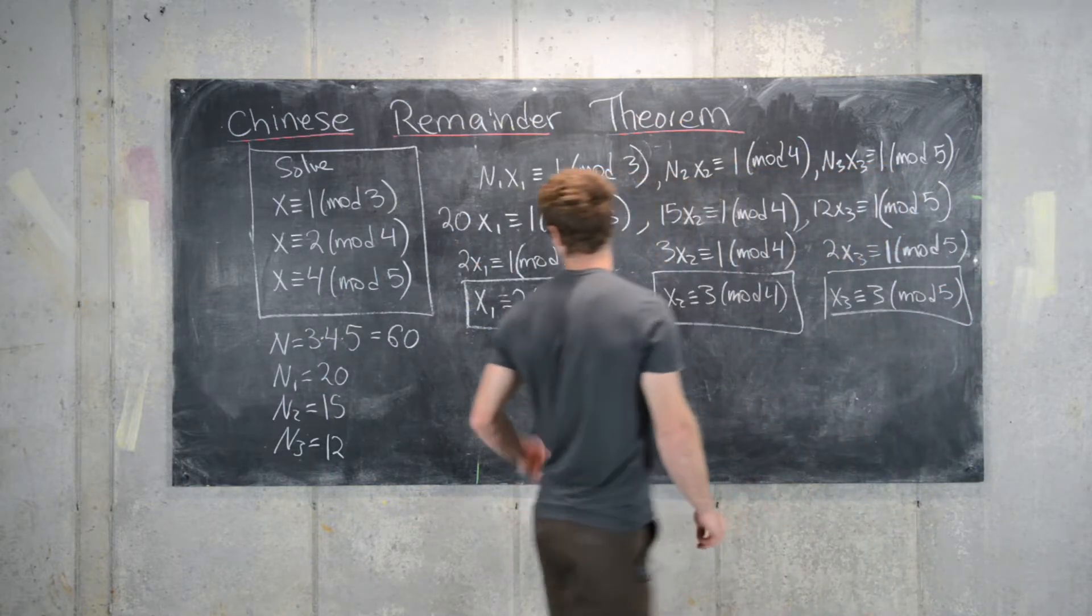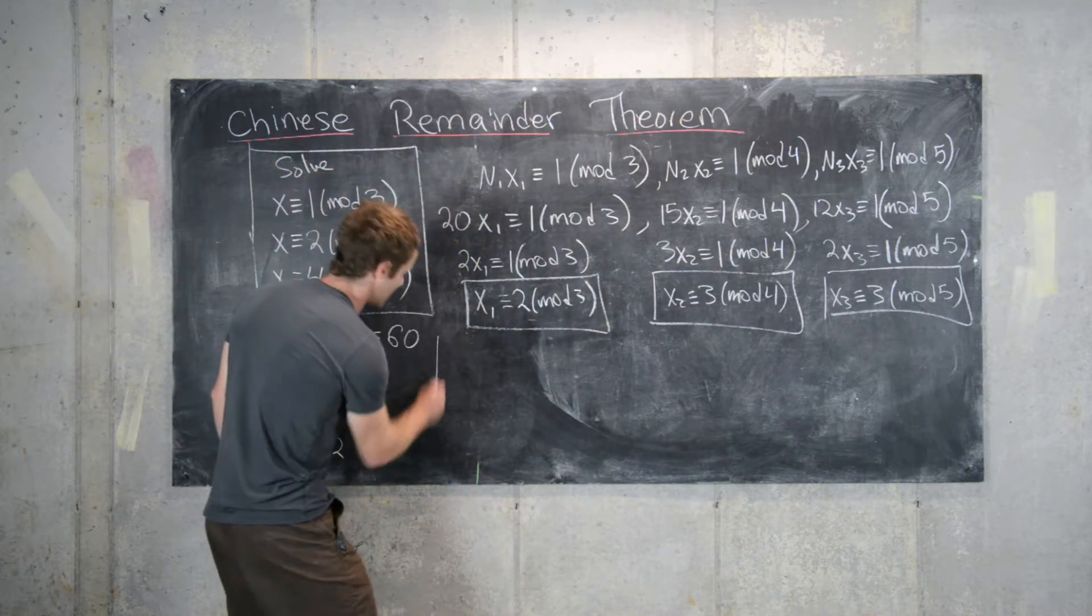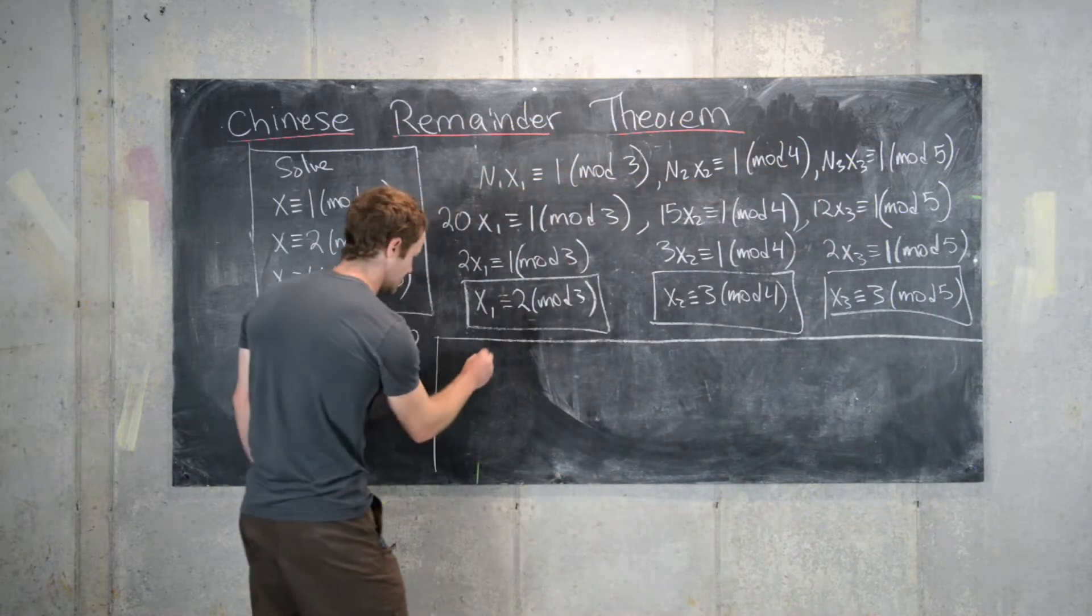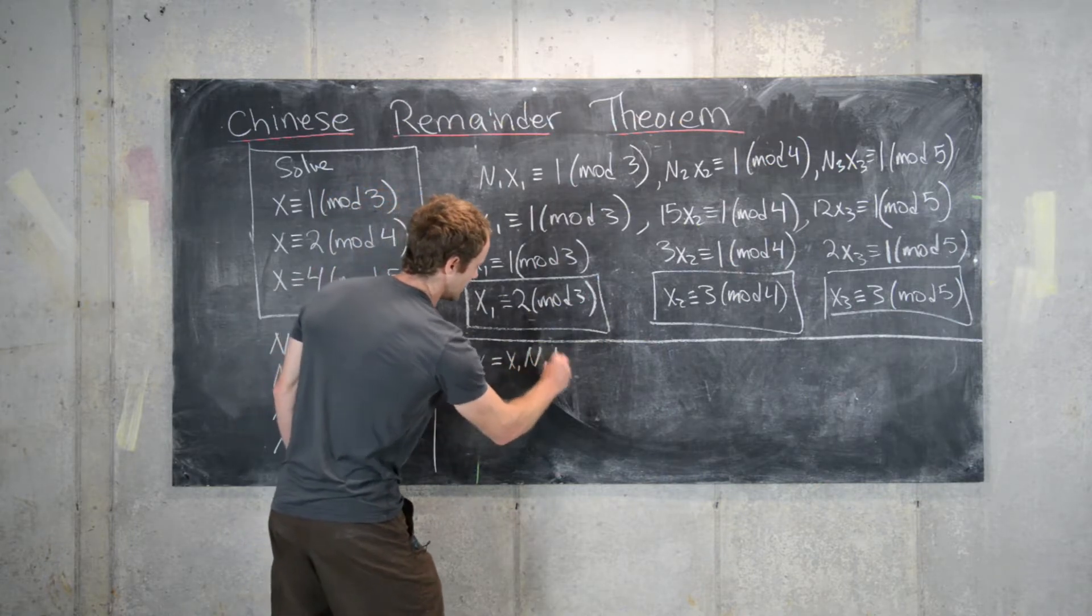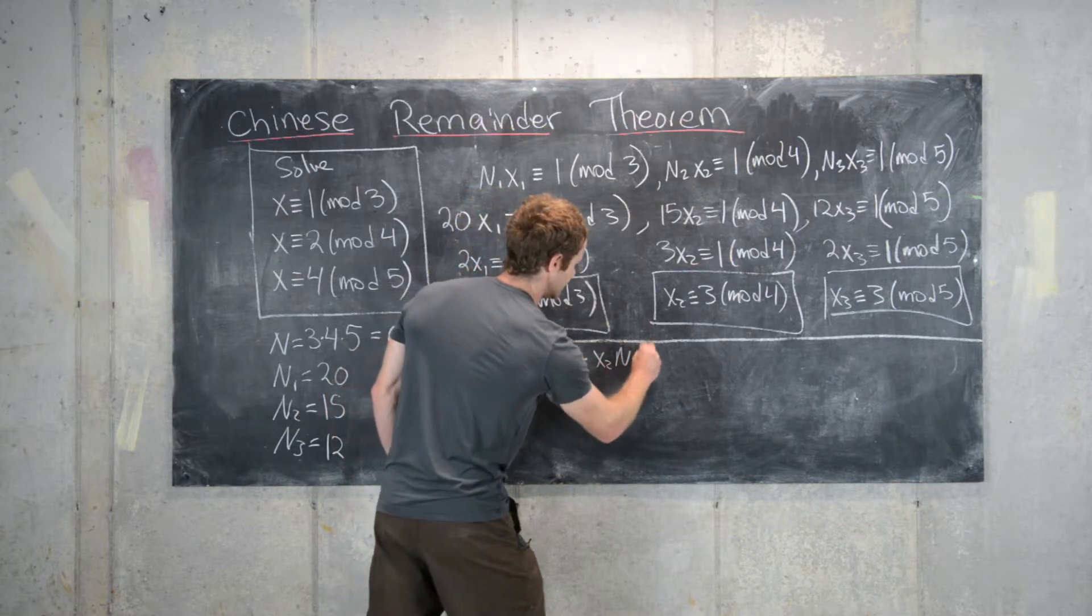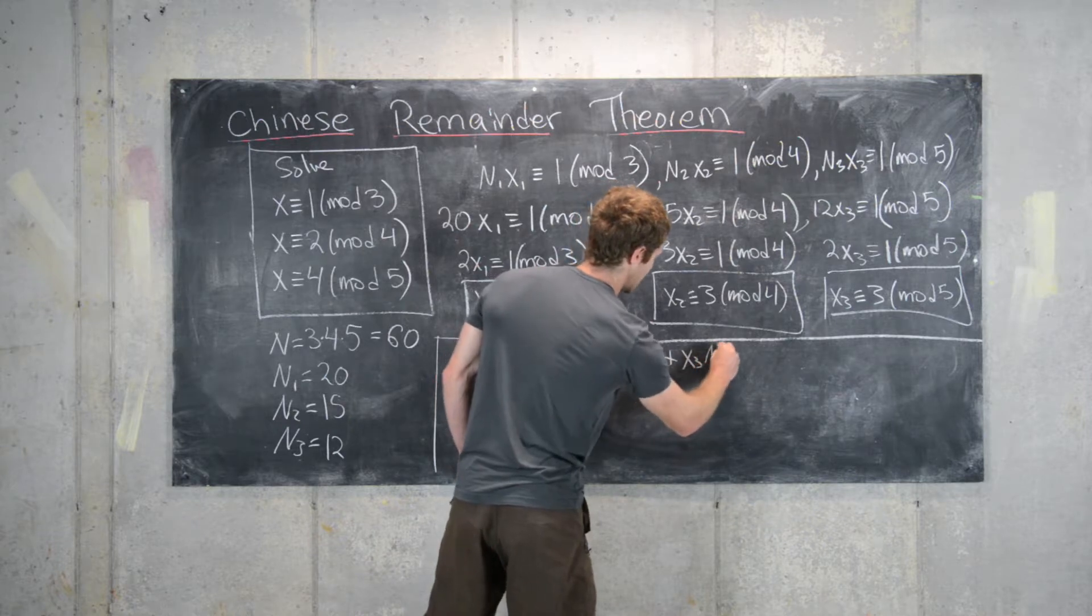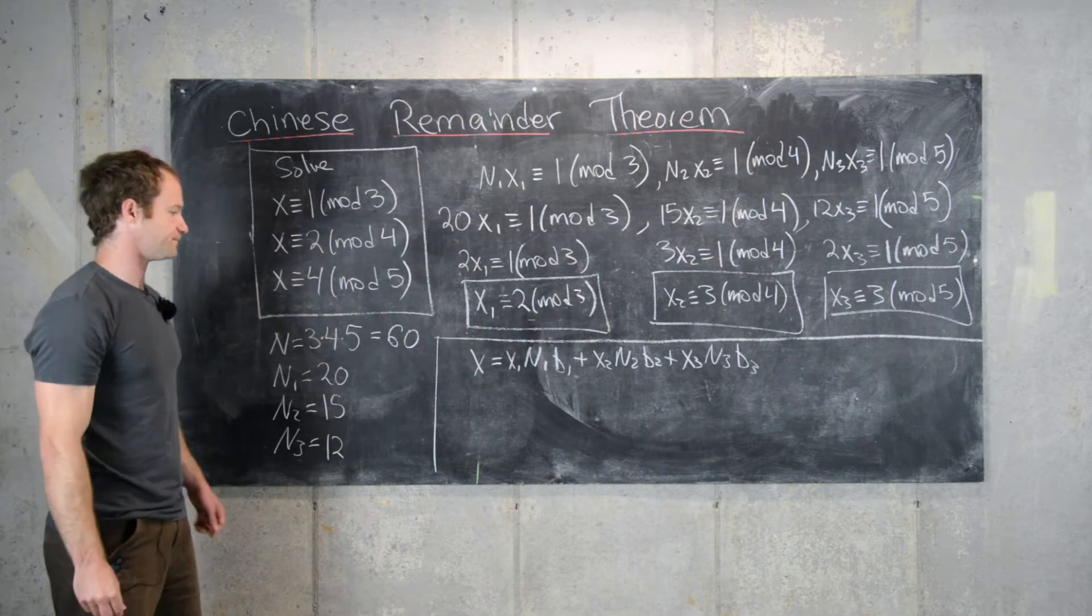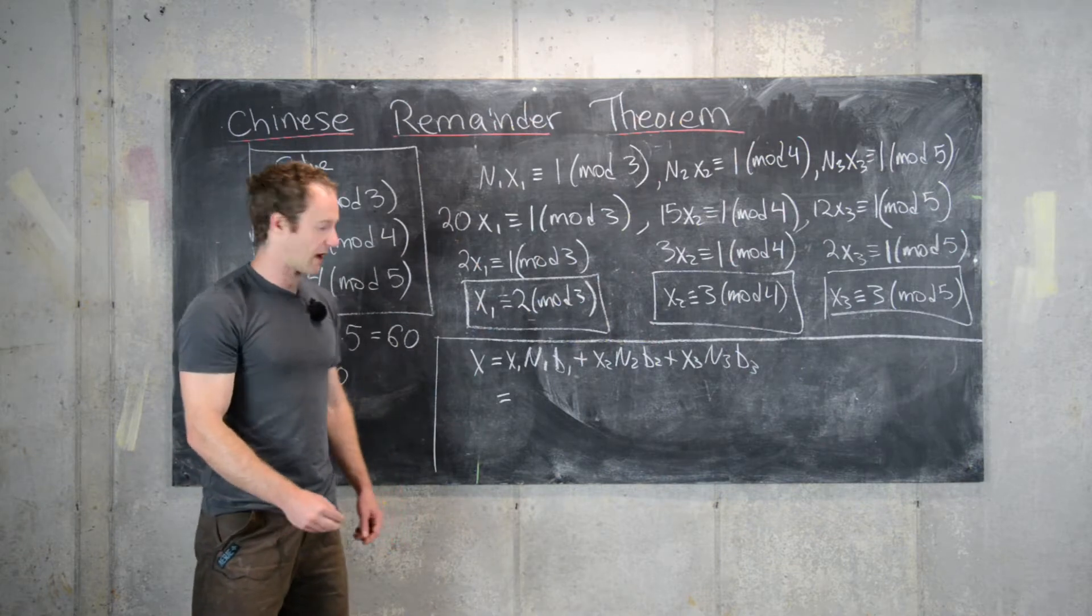Now we can form our solution. Our solution will be given by x1n1b1 plus x2n2b2 plus x3n3b3, where the b's are given over here.